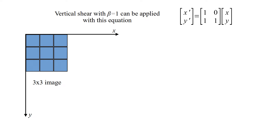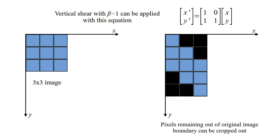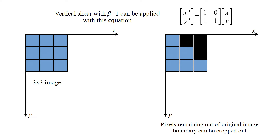Vertical shear with beta equal to 1 can be applied with this equation. This is the transformed image. After cropping, we get this image.